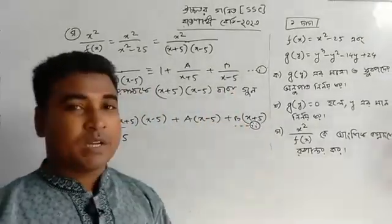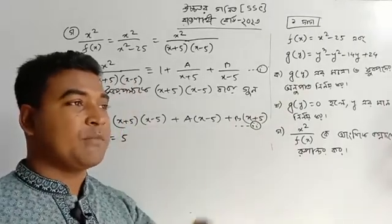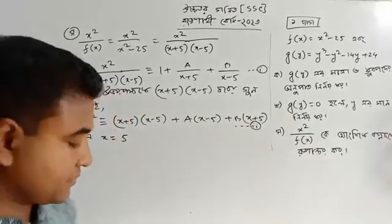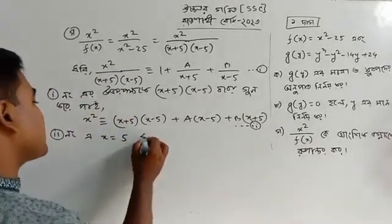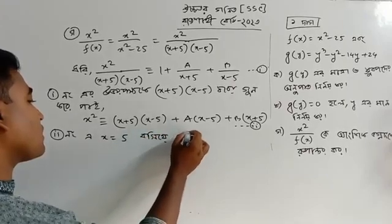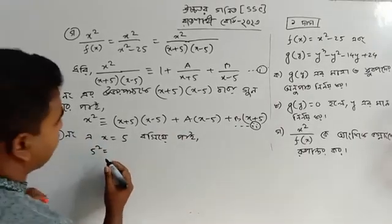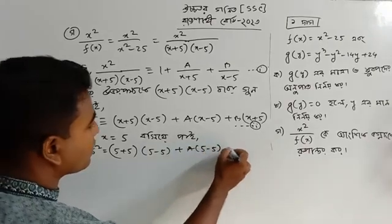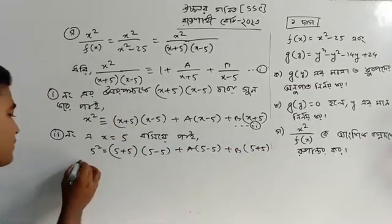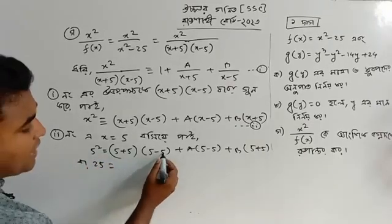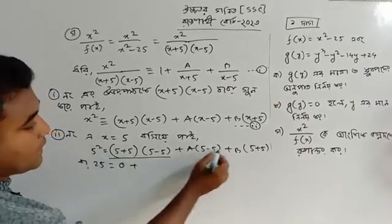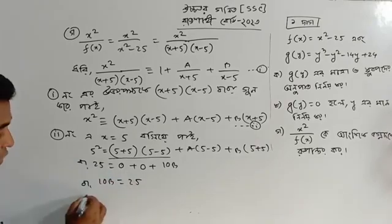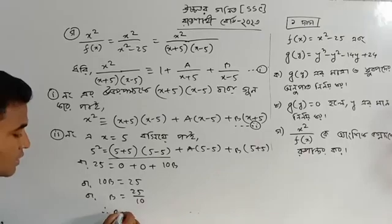I will say that x is equal to 5, and then the x will be equal to 5. Five squared is twenty-five. Five minus five is zero. So we get ten B, ten b equal to twenty-five.